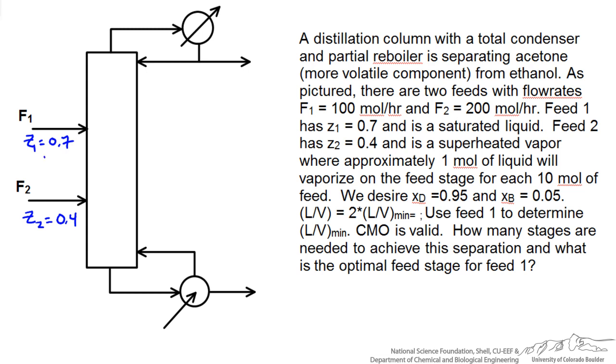We are told that feed 1 is a saturated liquid so we know the Q value must be equal to 1. However we do not know the Q value of feed 2 but we are given information which we can calculate, so we will do that in a little bit. We are also given flow rates so we can put that into our diagram.